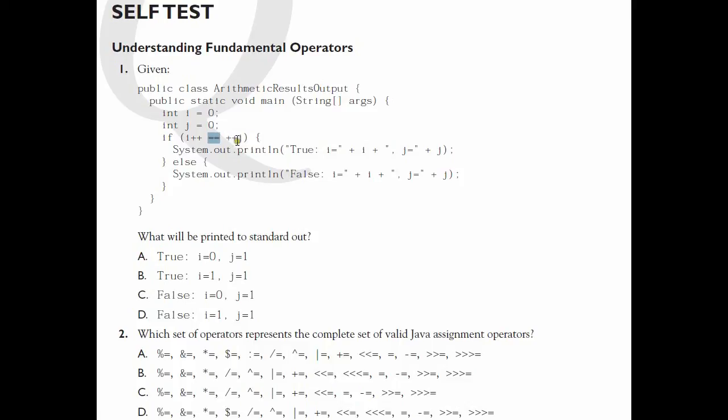j's value is incremented by 1 before j is evaluated. So j would be equal to 1, and so this condition would be false.